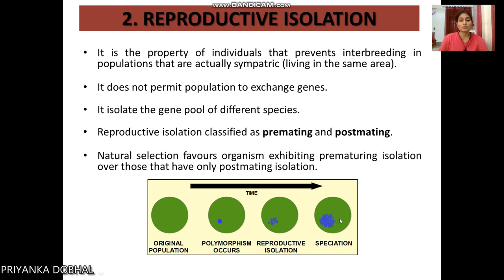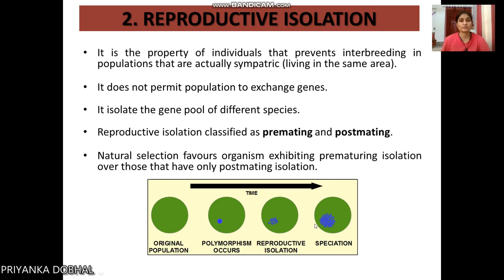Because of this reproductive isolation, the green-colored individuals become one species and the blue-colored individuals become a different species. Over time, these two different species have evolved due to polymorphism. This is an example of reproductive isolation.